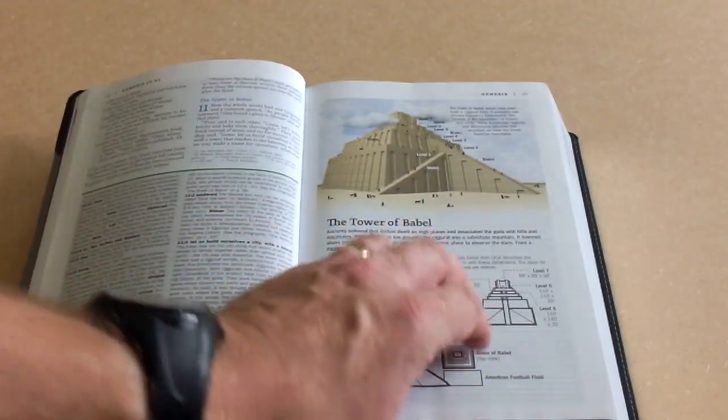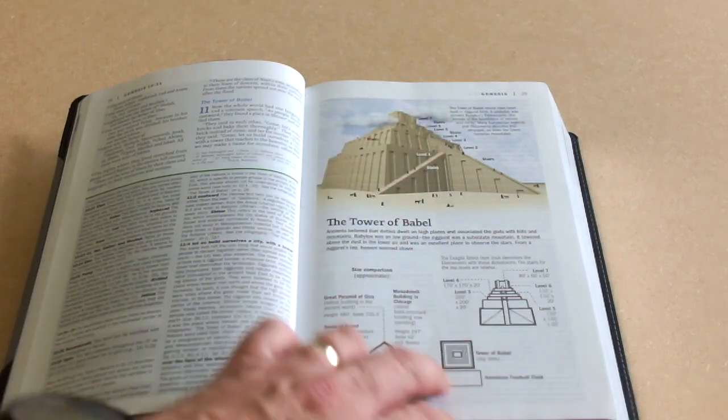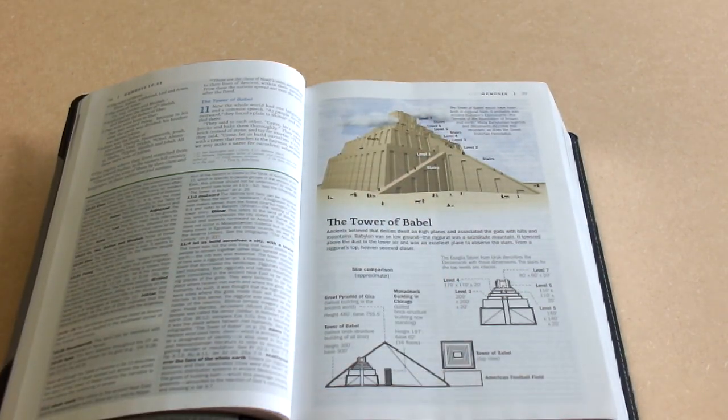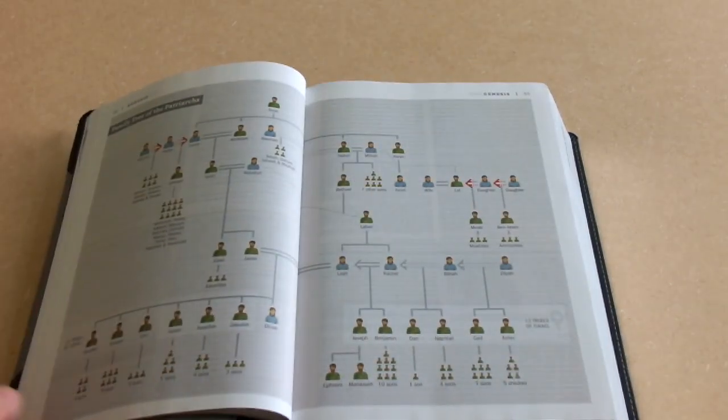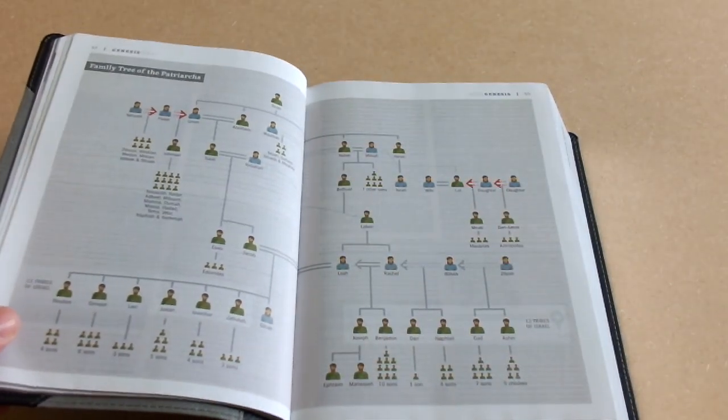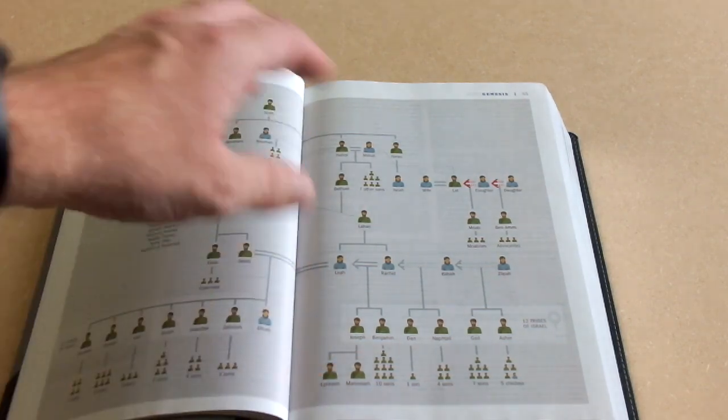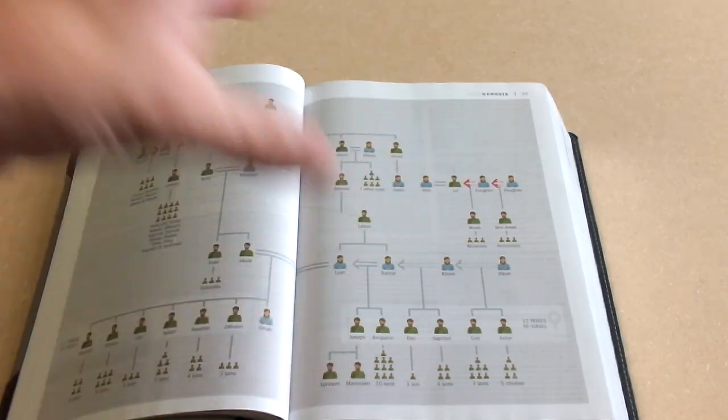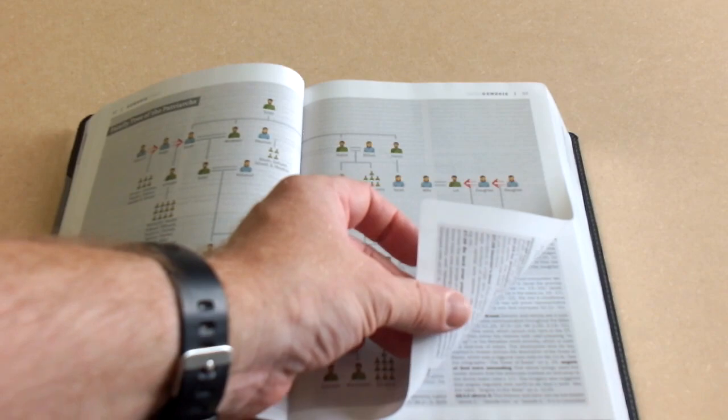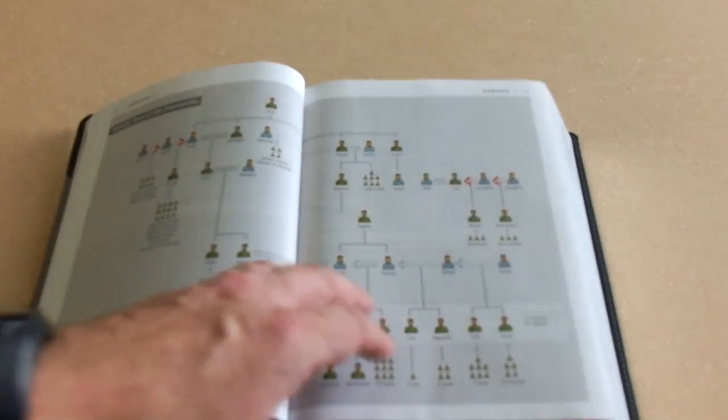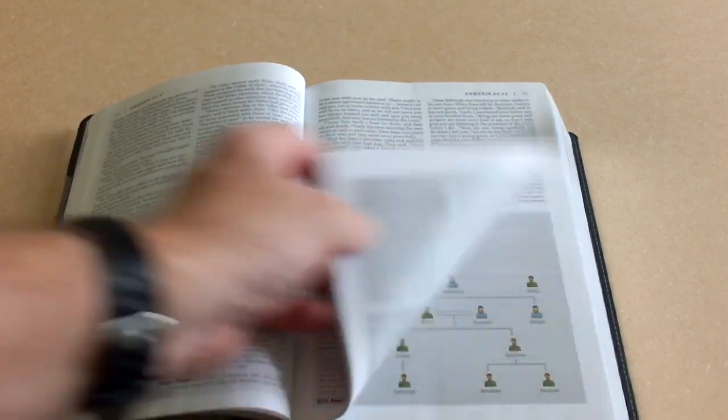So you're going through this, you've got a lot of stuff in here. There you've got the Tower of Babel there. You can see what it looks like compared to an American football pitch, the sizes of it. But there tends to be that. And this is an example of one of the family trees. You see this is the family tree of the patriarchs. And it shows you how they all relate to each other and who's the father of who. And I found that very interesting. You can read the genealogies, but to actually see them is very helpful, I find.